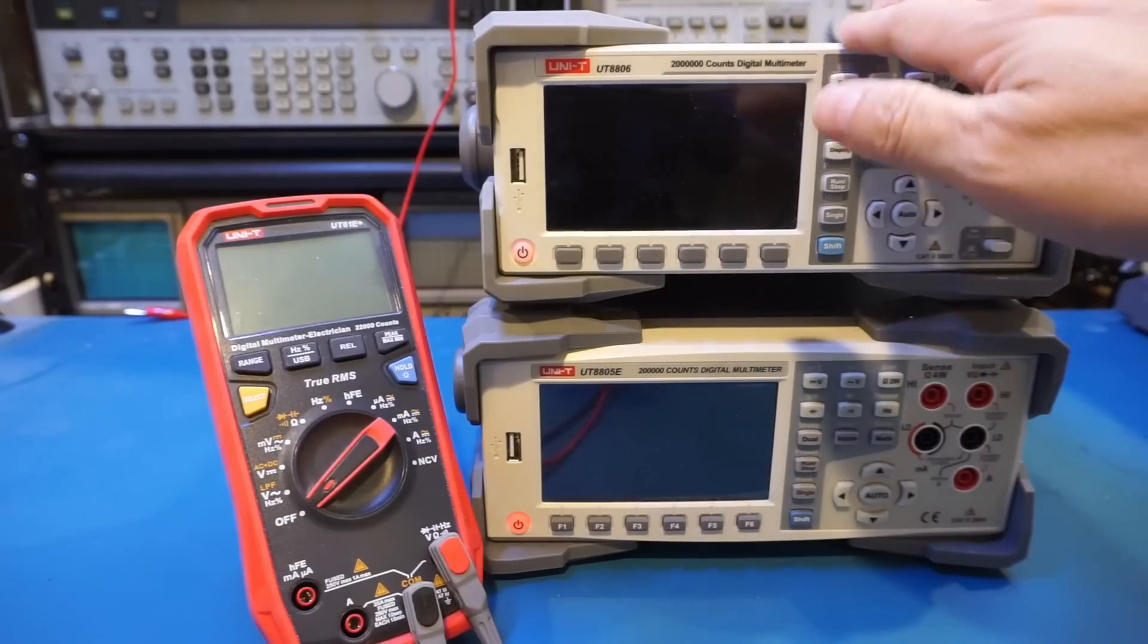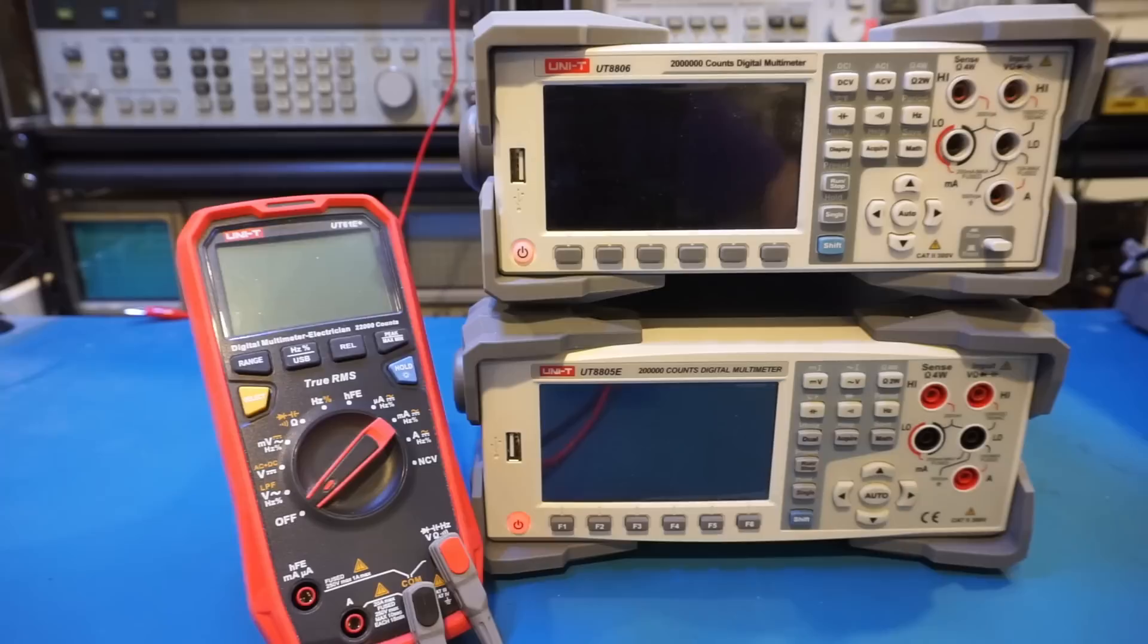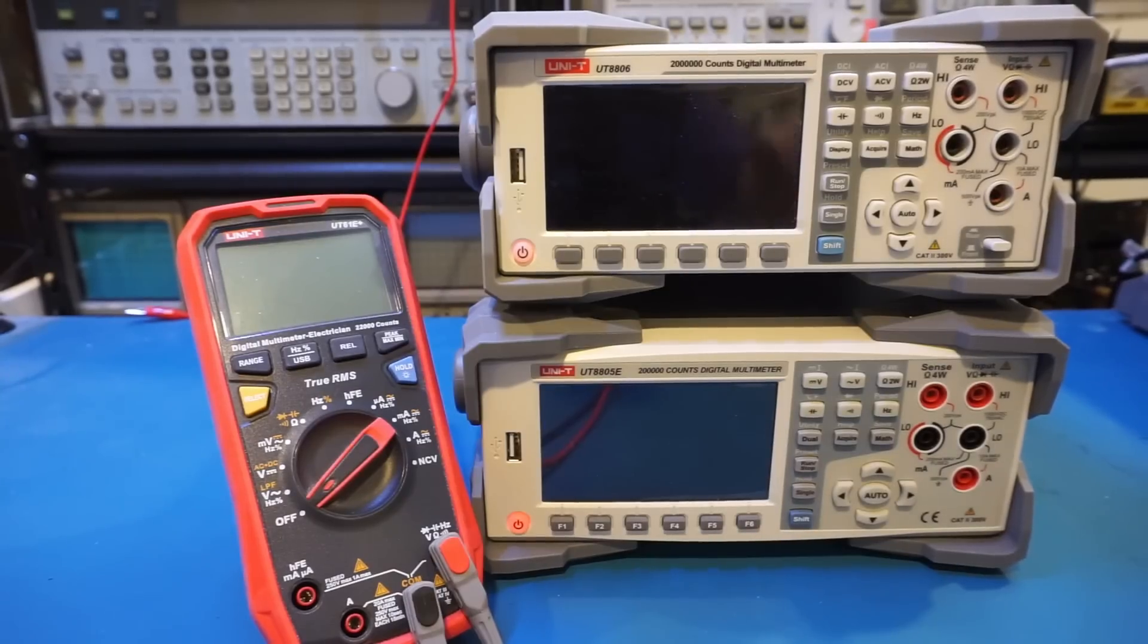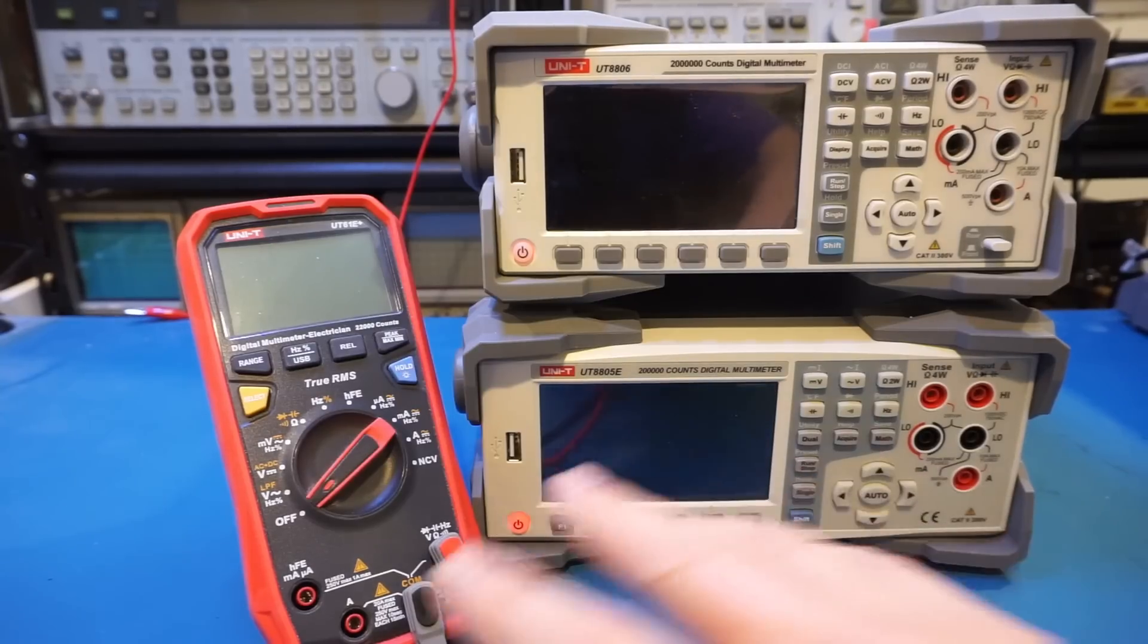And the UT8806E is a 2 million counts meter. This UT61E plus has 22,000 counts as I mentioned a moment ago, what it really means is that the biggest number the meter can display is up to 22,000, and the full scale of course is also 22,000.